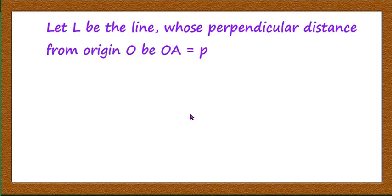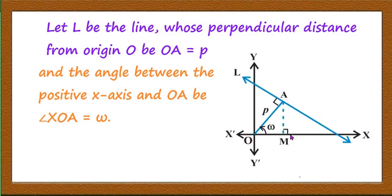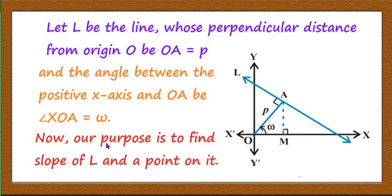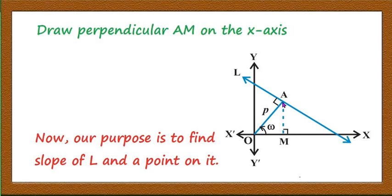Now let us take a line l whose perpendicular distance from origin O, that is OA, is equal to p, and the angle between the positive direction of the x-axis and OA — that is angle XOA — is equal to omega. Let us draw the figure: the coordinate axes and the line, with the normal drawn from the origin to the line. The distance is p and omega is the angle made by OA with the positive x-axis. Our purpose is to find the slope of l and a point on it, so we can use the point-slope form.